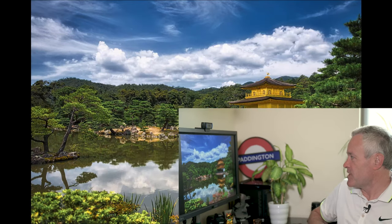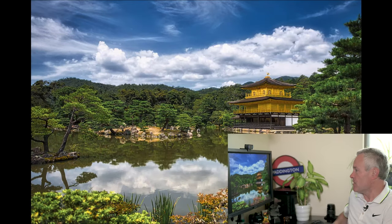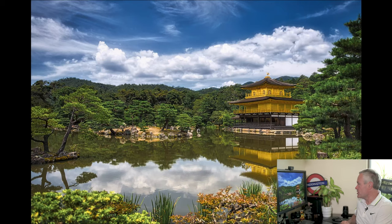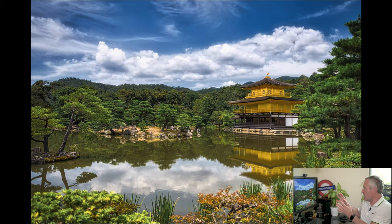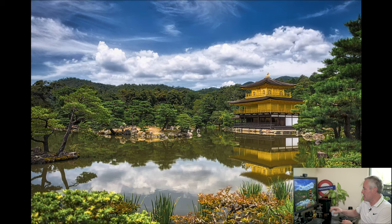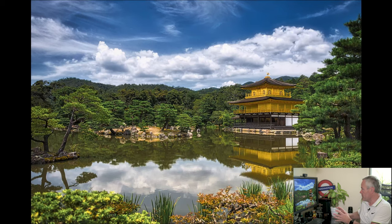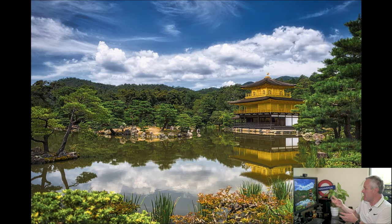As this image of the Golden Temple in Kyoto shows, without the clouds the sky would be very flat and there wouldn't be the clouds in the reflection on the pond in front of the temple, so they really add to the image.